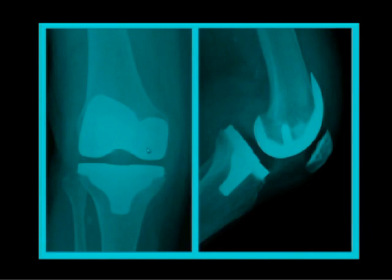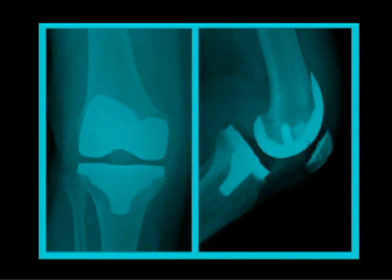This x-ray is looking at the knee from the front, and this is looking at it from the side. Your kneecap remains — I get this question a lot: did you take out my kneecap? No. We just put a plastic button underneath it, but you still have your own kneecap. The clear space visible is a plastic button underneath the kneecap.